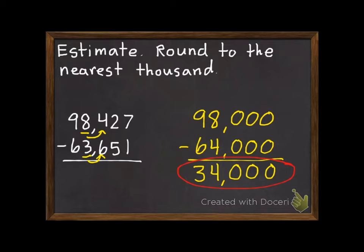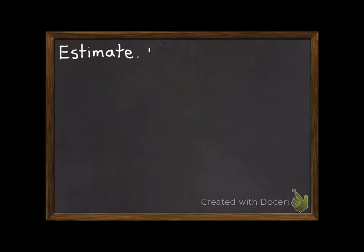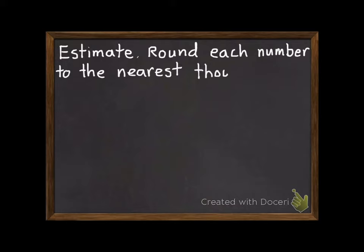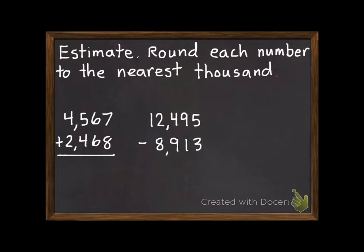I think we're ready to already jump in and have you do two practice problems, or three actually. So estimate, round each number to the nearest thousand. So you're going to have three practice problems. You're going to round each of them to the thousands, and make sure you double check to see if you're adding or subtracting. Go ahead and pause it and then unpause it to check your work.